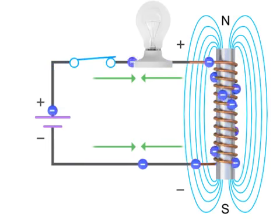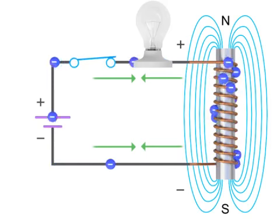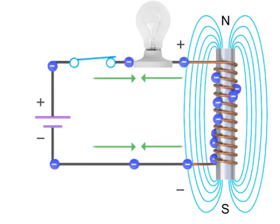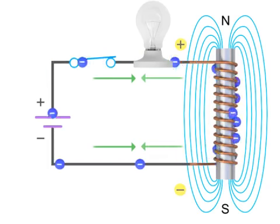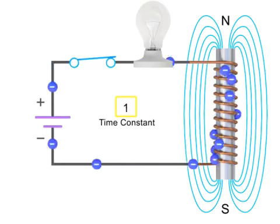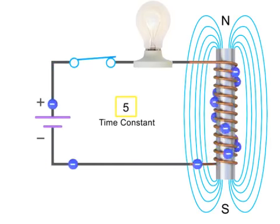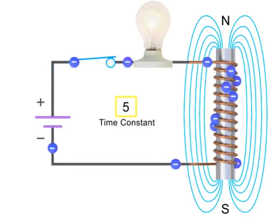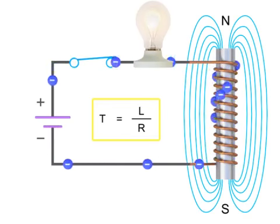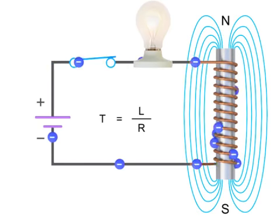However, once the electromagnetic field stops expanding based on the level of changing current, the flux will no longer generate an opposing voltage in the circuit. The current will continue to flow and reach its maximum value after 5 time constants, or 5T, where T is equal to L divided by R. The light bulb will then be at its maximum brightness.